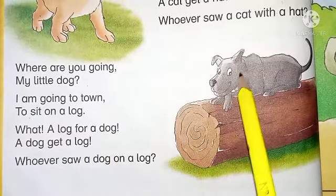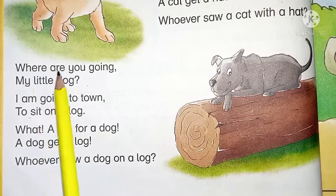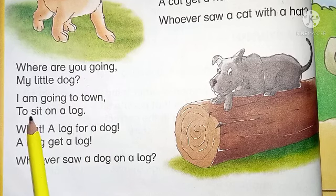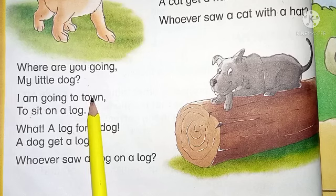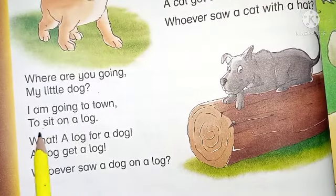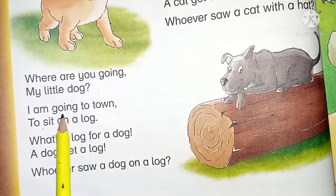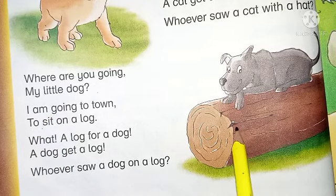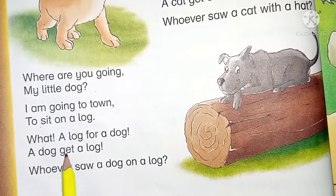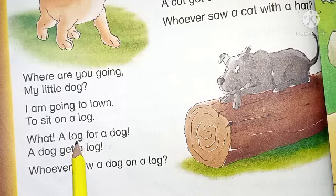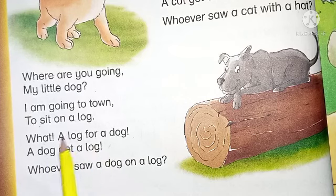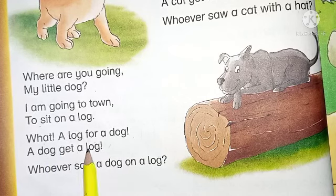The next is the dog sitting on the log. 'Where are you going, my little dog?' — meri doggy, aap kahan ja rahe ho. 'I am going to town to sit on a log' — میں town کی طرف جا رہا ہوں log پہ بیٹھنے کے لئے، ایک لکڑی کے بڑے سوختے پہ بیٹھنے جا رہا ہوں. 'What a log for a dog! A dog get a log?' — لکڑی کا کندہ dog کے لئے، اور dog ایک کندے پہ بیٹھے گا.